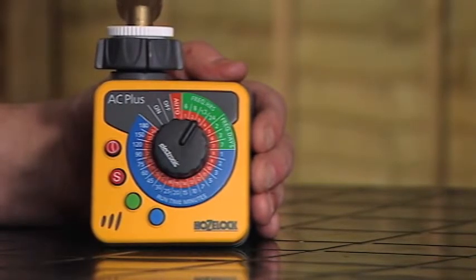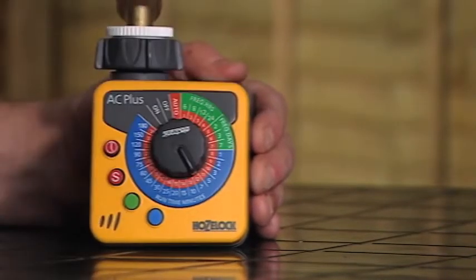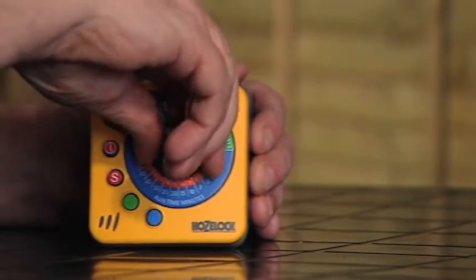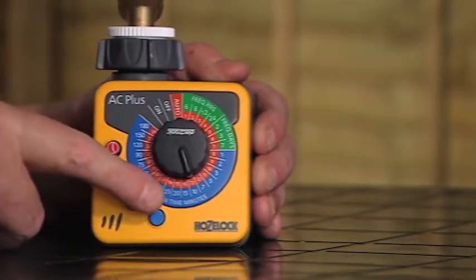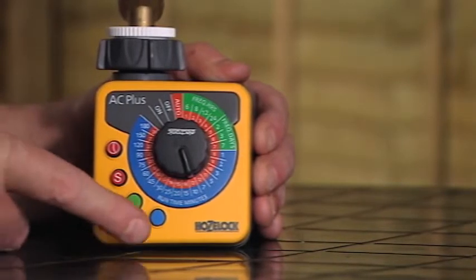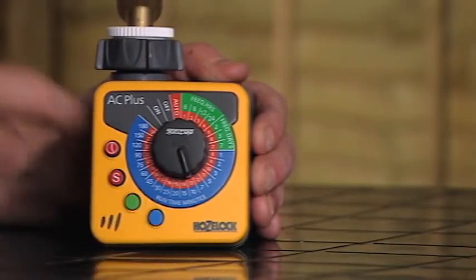The last thing we have to tell the machine is how long to turn the water on for. We've decided perhaps that we want to select ten minutes. So we turn the dial to the ten minutes position, and lastly press the little blue button to confirm that and you'll hear the little beep.